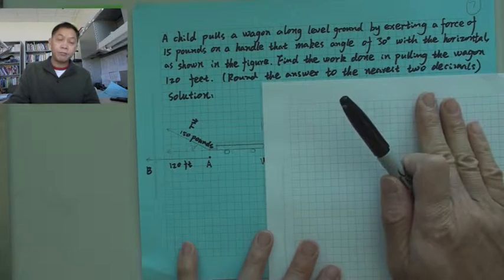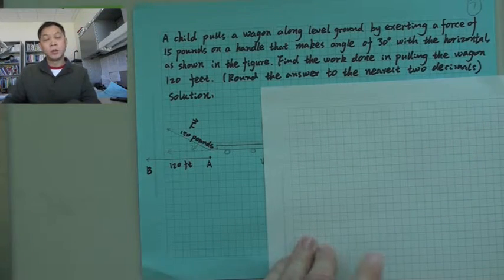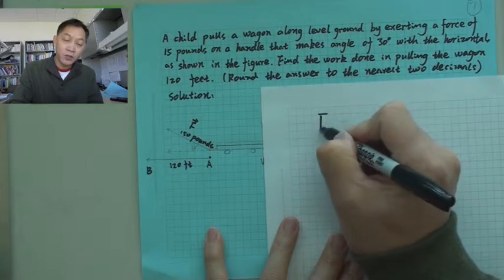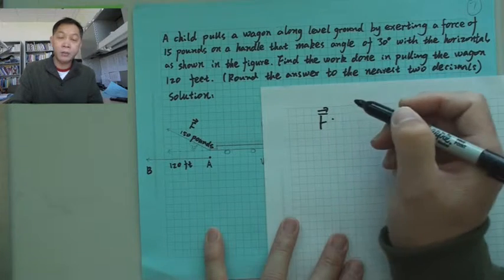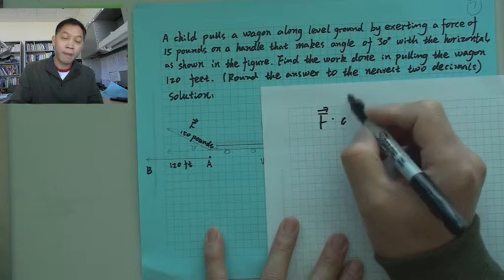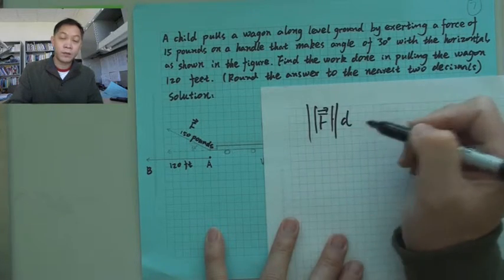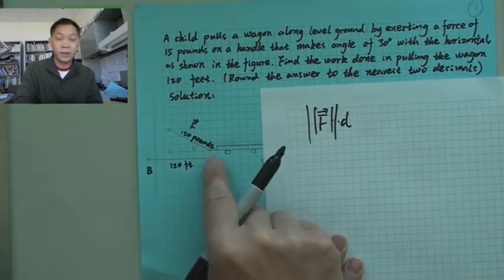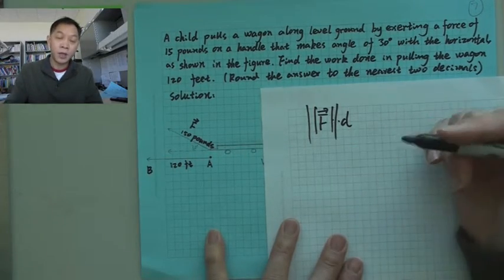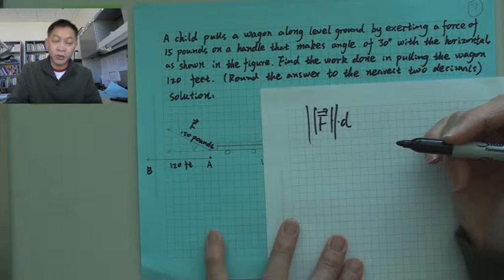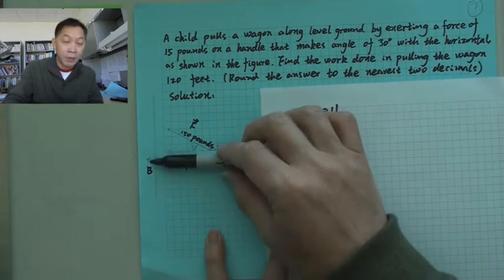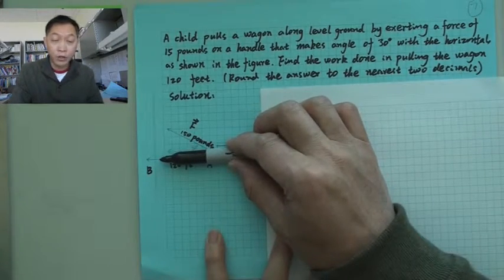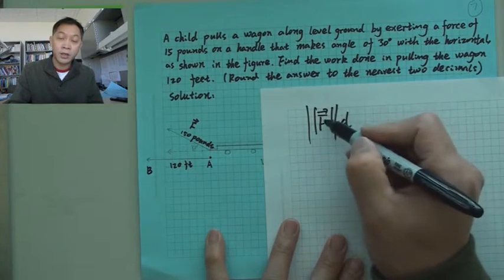In physics, work is defined as force times distance. The distance is 120. But the work is defined by the force in the same direction — not just any direction, but the force component in the direction of motion.